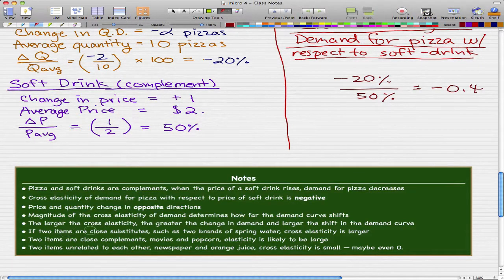That pretty much means that the larger the cross elasticity, the greater the change in demand and the larger the shift in the demand curve. And if two items are close substitutes such as two brands of spring water, the cross elasticity is probably larger. If two items are close complements like movies and popcorn, elasticity is likely to be larger again for much the same reason as substitutes.